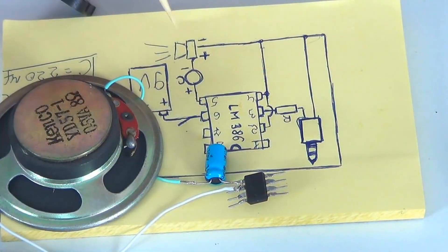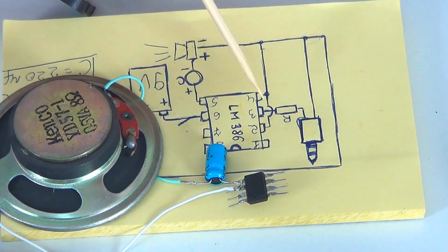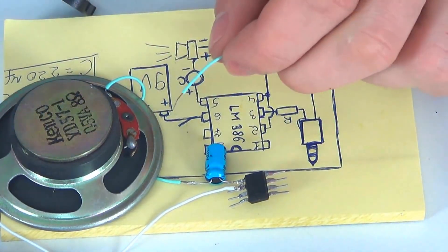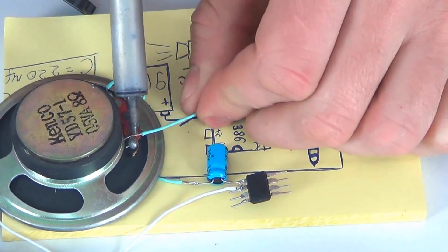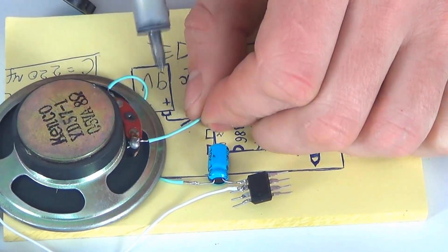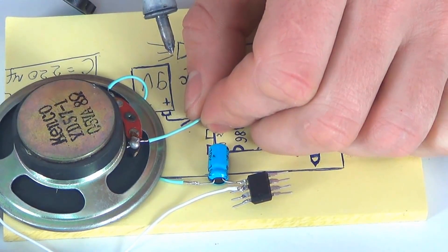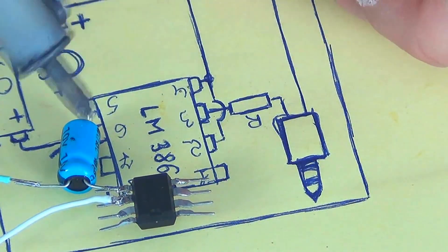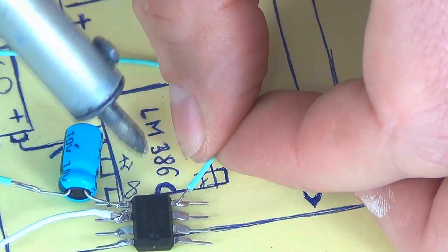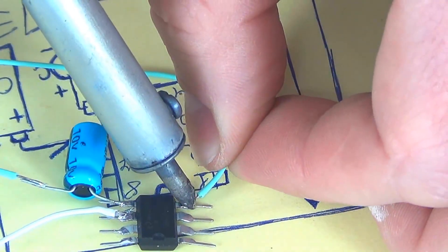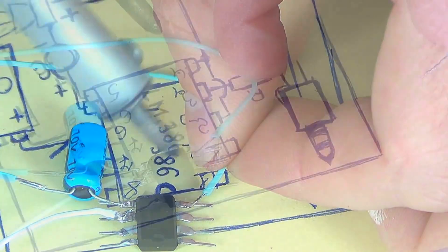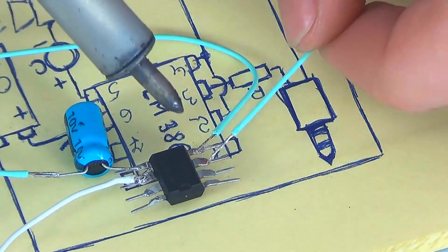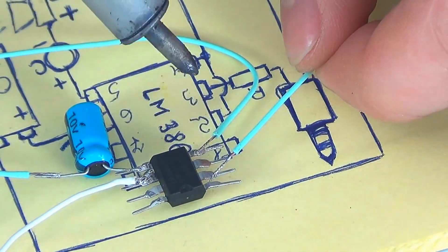Then, link the minus of the dynamic to the fourth and second poles of the microcircuit. First, to the minus of the dynamic. And solder this wire to the fourth pole on the right side of the microcircuit. And we solder the same wire to the second pole of the microcircuit. To do it, we're going to make a small bridge.